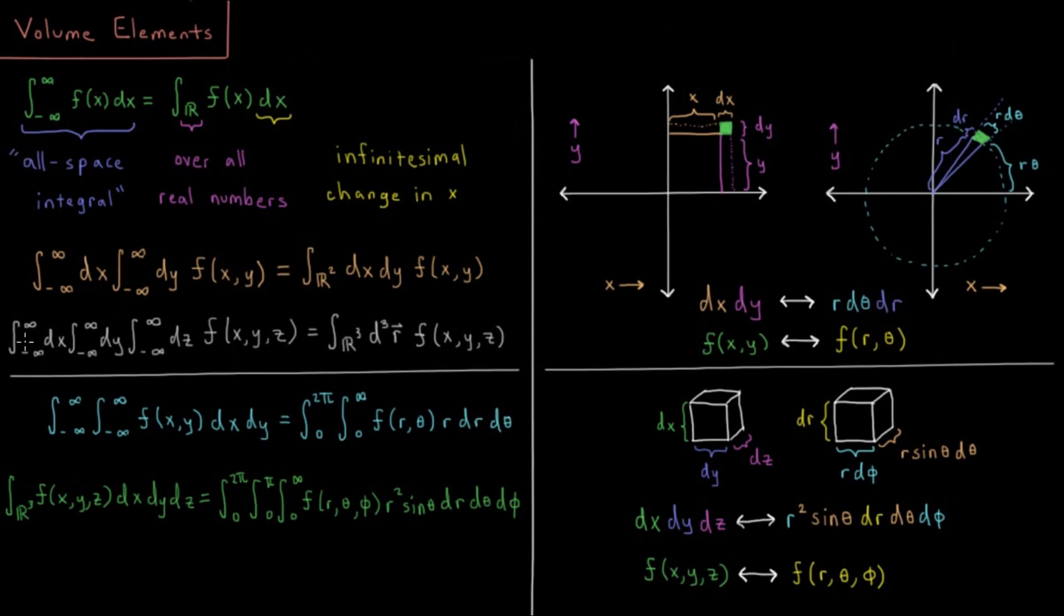Then we have the analog in three dimensions: x, y, and z, negative infinity to infinity in all of those, and of course that would be ℝ³. Sometimes you might also see the notation d³r where this r just represents the vector (x,y,z) and represents some cubic volume element, because in three dimensions these infinitesimals multiplying times each other—in two dimensions dx dy that would form a square, and in three dimensions dx dy dz or this d³r that would form a cube.